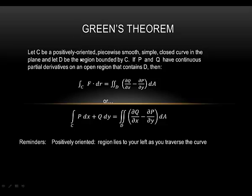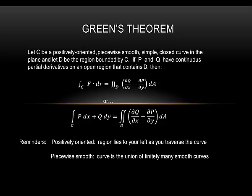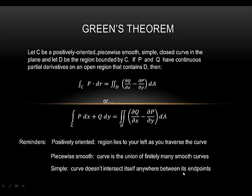A couple of reminders from the front part of the theorem. Positively oriented means as we travel around the curve, the region bounded should always be on our left. So if the curve is a simple circle, positively oriented means we would go counterclockwise, because we want the region inside the circle to always be on our left. Piecewise smooth means our curve is the union of finitely many smooth curves — it doesn't have to be smooth itself. Simple means the curve doesn't intersect itself anywhere between its endpoints, and closed means the initial point and terminal point are the same point.